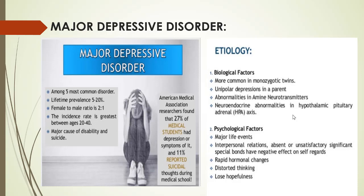Major depressive disorder is a major cause of disability and suicide. American Medical Association research found that 20% of medical students had depression and 11% reported suicidal ideation during medical school. Etiology includes biological factors — it is common in monozygotic twins, unipolar depression in parents, abnormality in neurotransmitters, and abnormality in the HPA axis.